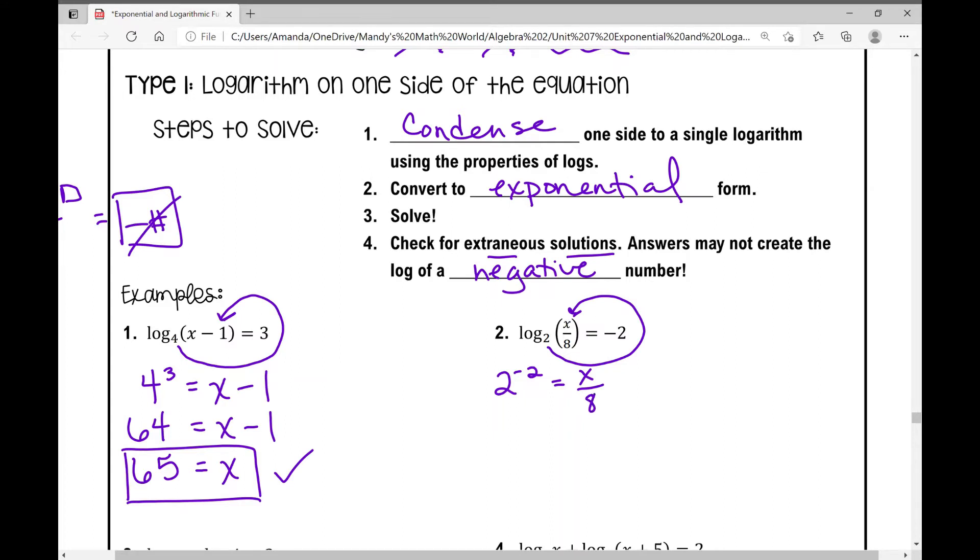And then what is two to the power of negative two? That's one over two squared, which is one over four equals x divided by eight. How do I get x all by itself? Multiply both sides by eight. When I do that, I get eight over four equals x. And can I simplify that? I sure can to two. X equals two.